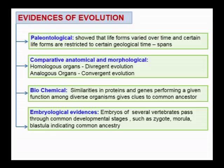Examples of homologous organs include forelimbs of man, cheetah, and wings of bat. Among plants, thorns of Bougainvillea and tendrils of Cucurbita are homologous organs, both being stem modifications. Examples of analogous organs are the eye of man and eye of octopus, wing of bird and wing of insect. Among plants, carrot and ginger are examples.